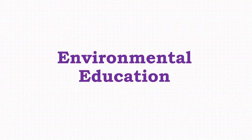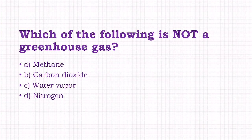Environmental Education. Which of the following is not a greenhouse gas? Options: Methane, carbon dioxide, water vapor, nitrogen. The answer to this question is option D, that is nitrogen.